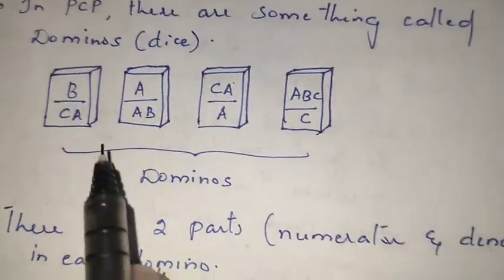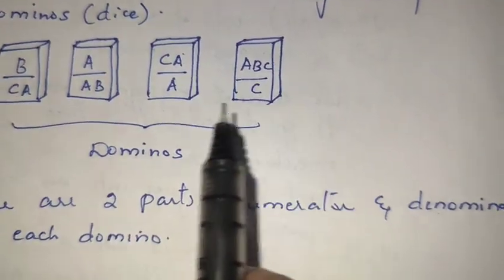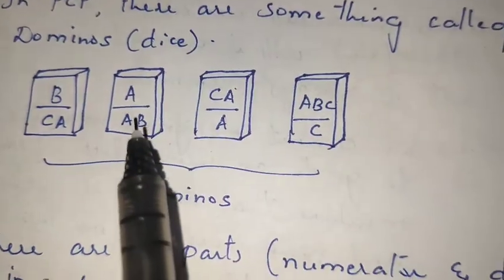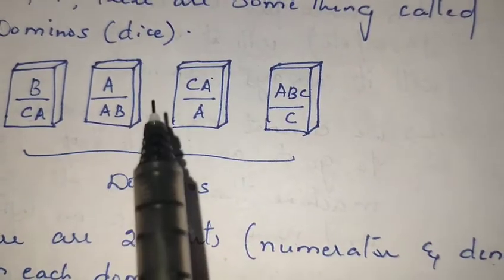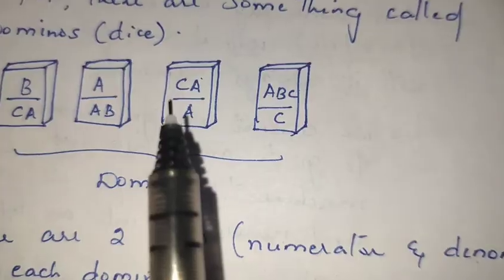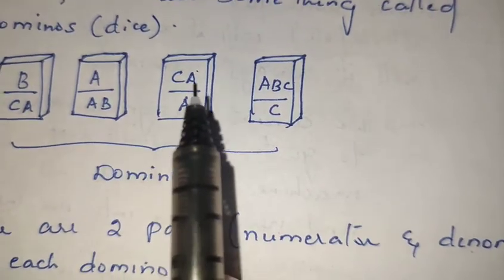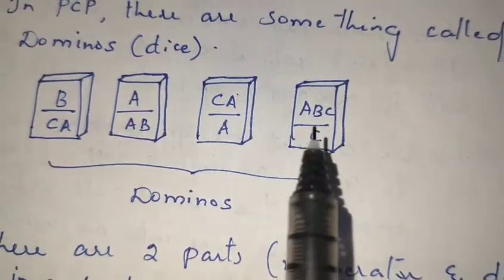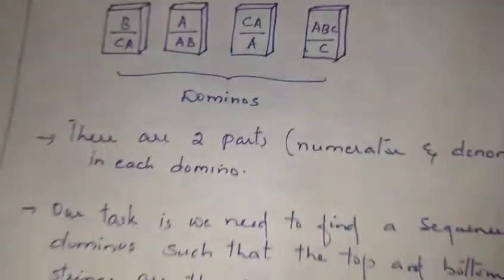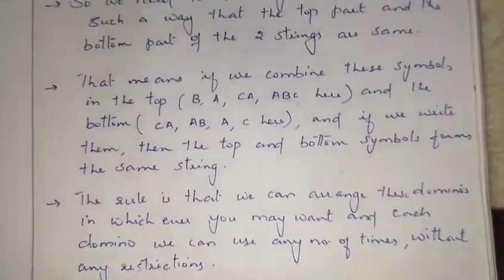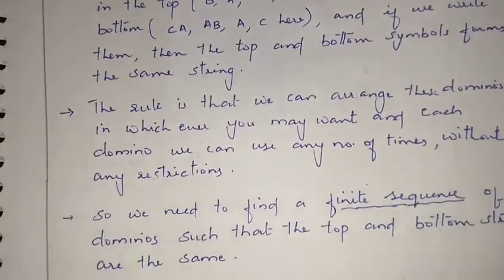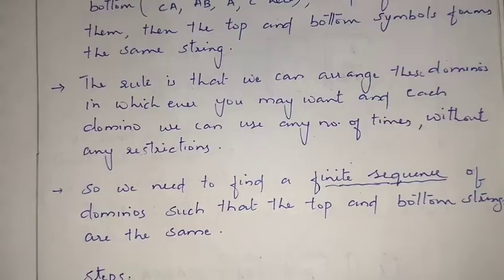The rule is that we can arrange these dominoes in any order, and we can also use a particular domino multiple times. We must find a finite sequence of dominoes such that the top and bottom strings are the same.